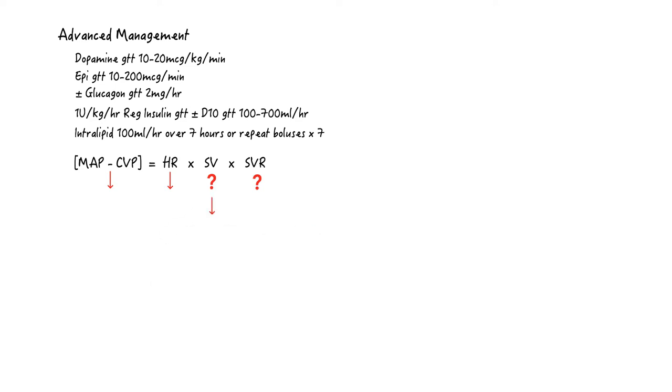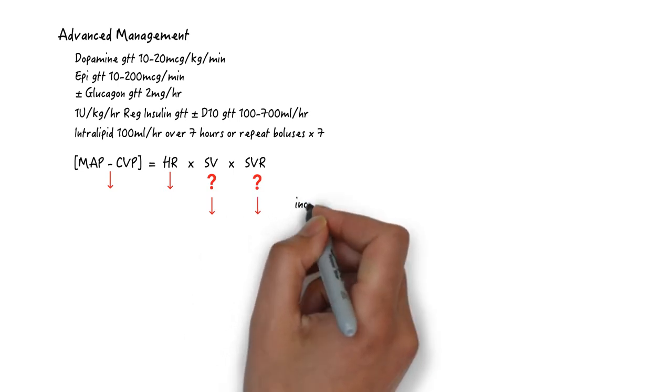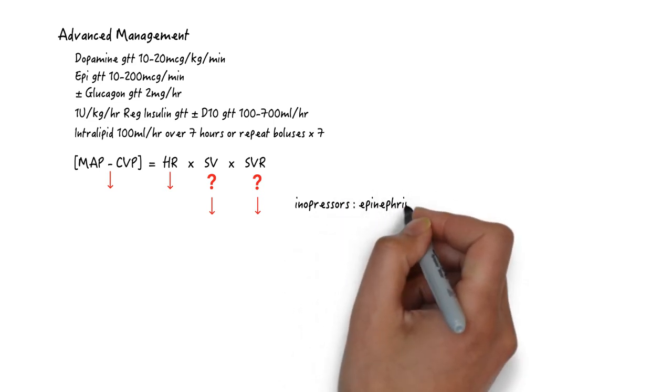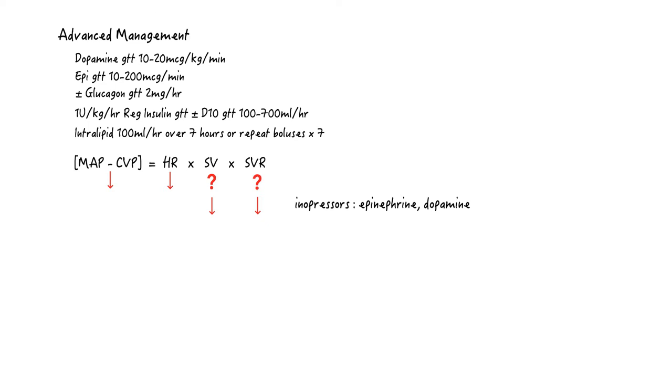There are four possible scenarios. The stroke volume is low and the SVR is low. This scenario is best served by more inotropic vasopressors, inopressors. Keep escalating epi doses. High dose insulin can be useful because it works through a different mechanism, but understand that it is an inodilator.